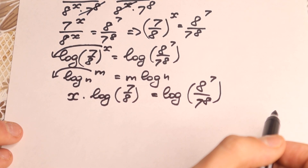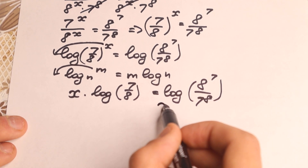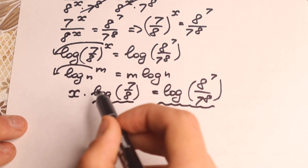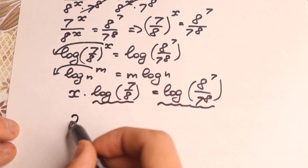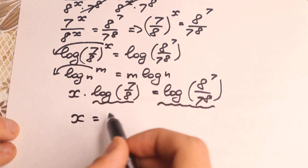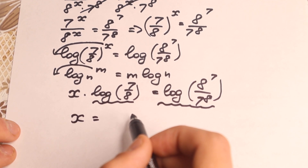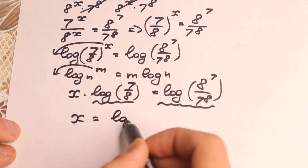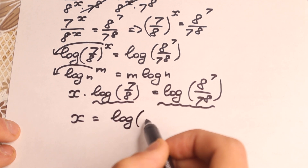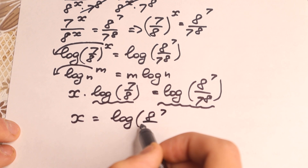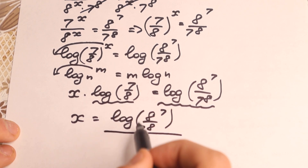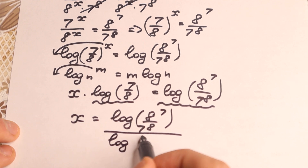This is a constant and this is a constant, so we don't need this constant near our x — we need only x. Let's divide both sides by log(7/8). As a result, x equals log of 8 to the power 7 over 7 to the power 8, divided by log(7/8).